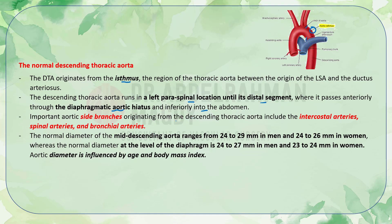Important aortic side branches originating from the descending thoracic aorta include intercostal arteries, spinal arteries, and bronchial arteries. The normal diameter of the mid-descending aorta ranges from 24 to 29 mm in men and 24 to 26 mm in women. At the level of the diaphragm, the normal diameter is 24 to 27 mm in men and 23 to 24 mm in women.